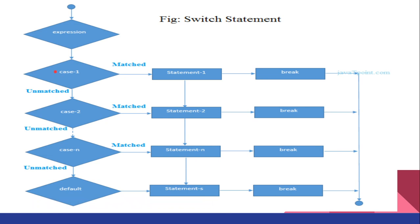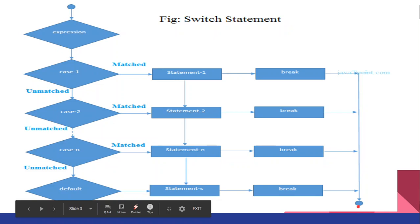If case 1 is not matched, it will go to case 2 and check whether it is matching or not. If it is not matching, it will go to case 3, and so on. If a case is matched, it will go to the corresponding case. Suppose case 2 is matched — the block of statements under case 2 will be executed. Then the break statement will cause the flow to exit out of the switch case block. This is how the switch statement works.